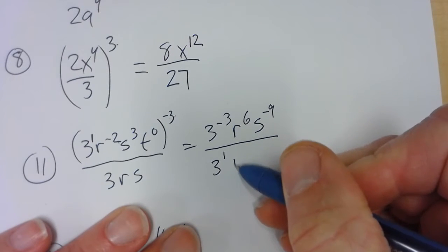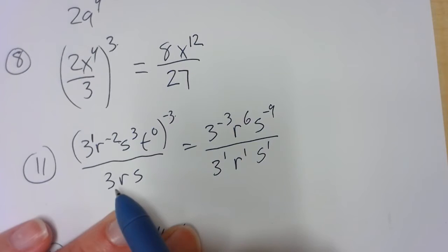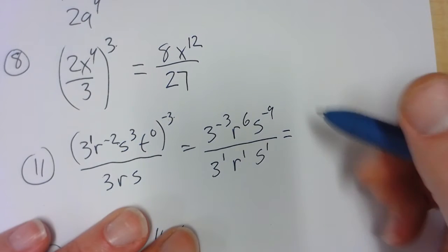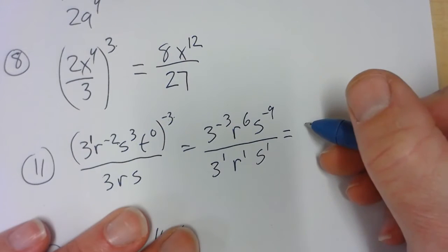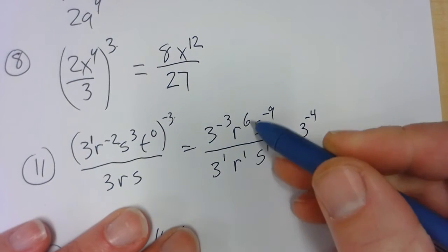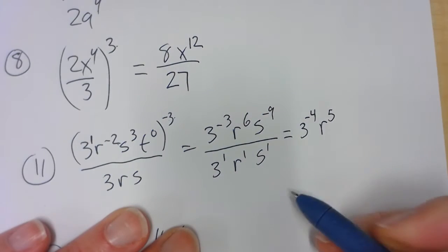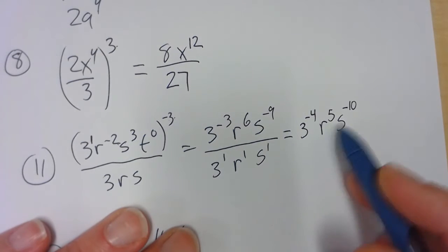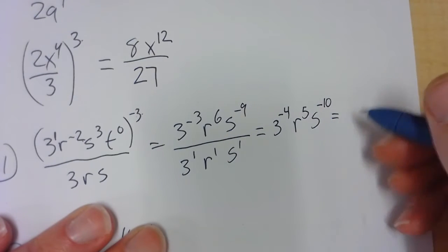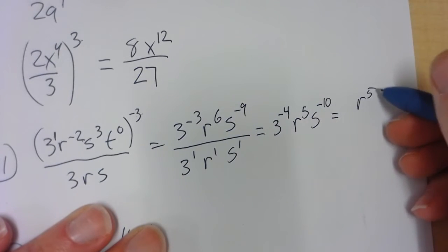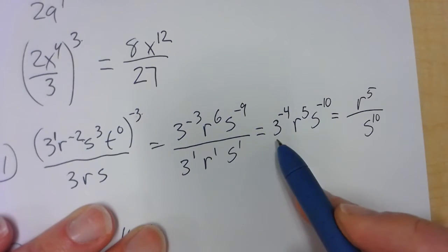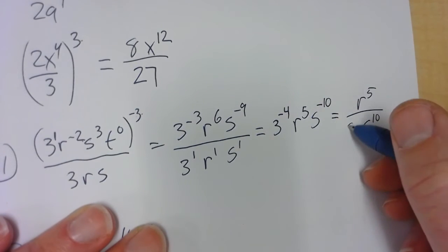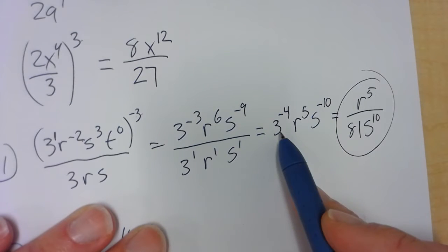3 to the 1st, r to the 1st, s to the 1st — there are 1s on each one of those. That will help us with the subtraction, because when we divide like bases, we subtract the exponents. Negative 3 minus 1, 6 minus 1, and negative 9 minus 1. The negatives go to the bottom of the fraction. So it's r to the 5th, s to the 10th. Now 3 is to the 4th power but it's going to be on the bottom, and 3 times 3 times 3 times 3 is 81, so it's over 81.